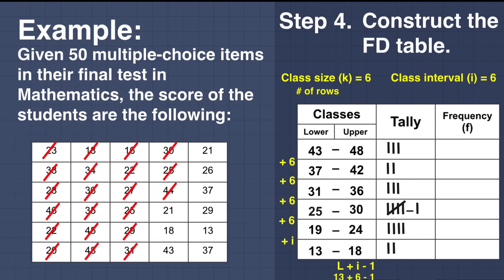Continuing: score 44 falls in 43 to 48 — now 4 for that class. Score 21 falls in 19 to 24 — now 5 there. Score 18 falls in 13 to 18 — now 3. Score 43 falls in 43 to 48 — now 5. Score 21 falls in 19 to 24 — now 6. Score 26 falls in 25 to 30 — now 7. Score 37 falls in 37 to 42 — add 2, making 3 for that class. Scores 29 and 29 add to 25 to 30 — we now have 8. Score 13 falls in 13 to 18 — now 4.